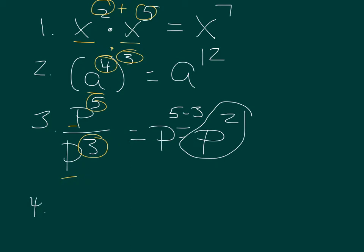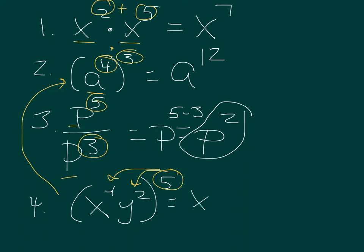Four, we have x to the fourth y squared all to the fifth, which basically means I take the exponent on the outside and distribute it to both exponents, very similar to this one where we're multiplying because we have a power to a power. So that becomes x to the twentieth y to the tenth.